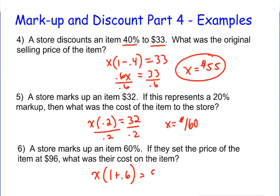that equals the selling price, which is 96. So if you divide both sides by 1.6, you end up with 96 divided by 1.6, which actually is a nice round $60.